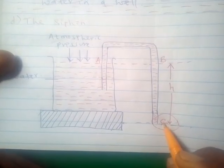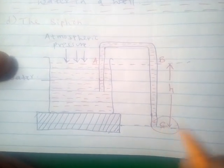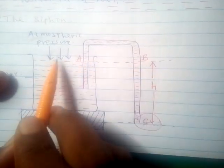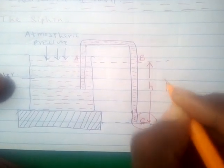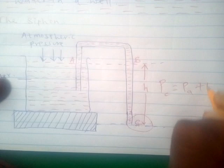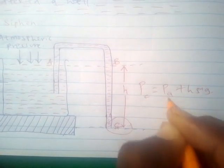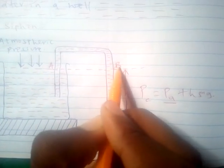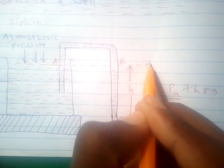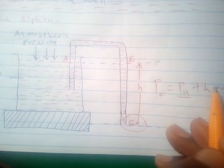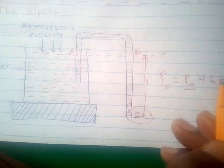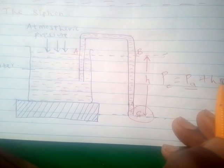Point C is lower, so the pressure at point C is the sum of atmospheric pressure at point A plus the pressure due to the liquid column — that is, P_C = P_A + Hρg. The pressure at point A equals the pressure at point B because they are at the same horizontal level, according to Pascal's principle, which states that pressure in a fluid is equally transmitted to all parts of an enclosed liquid.